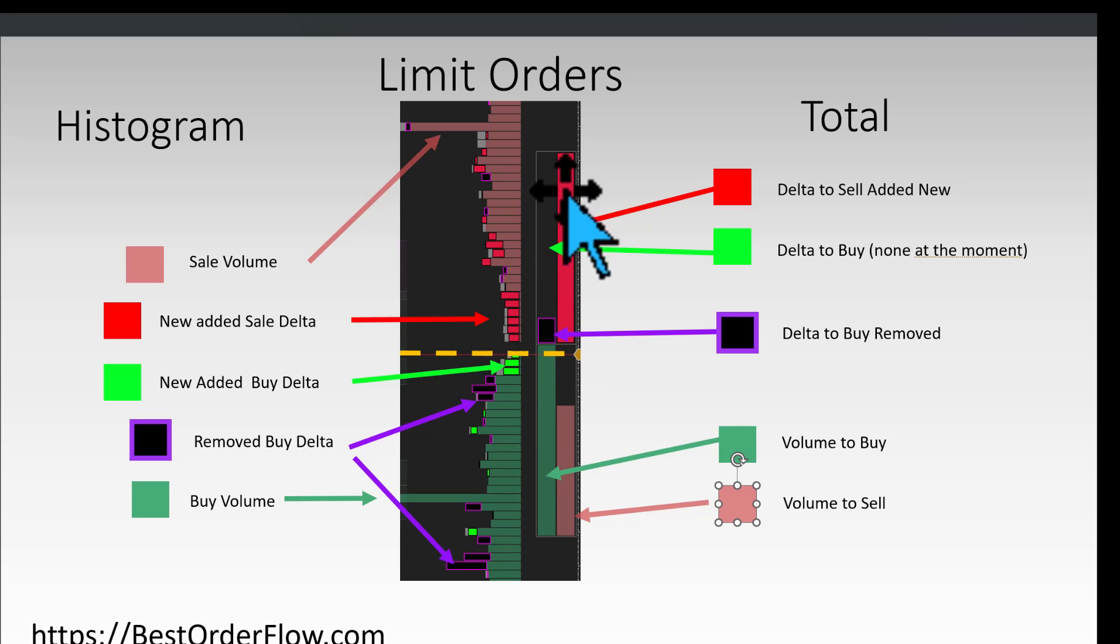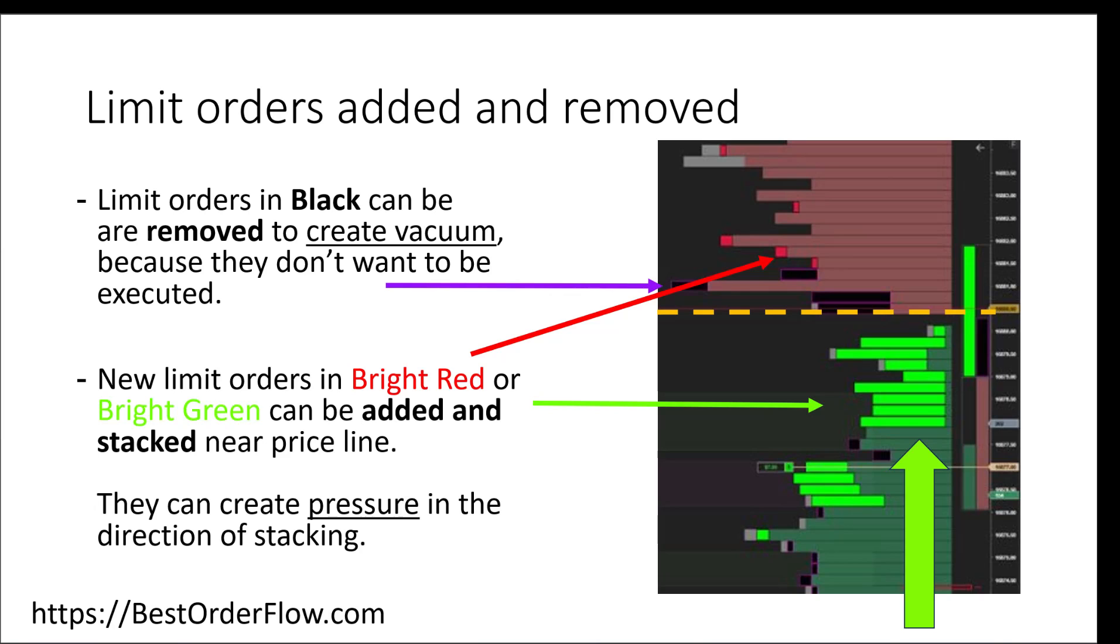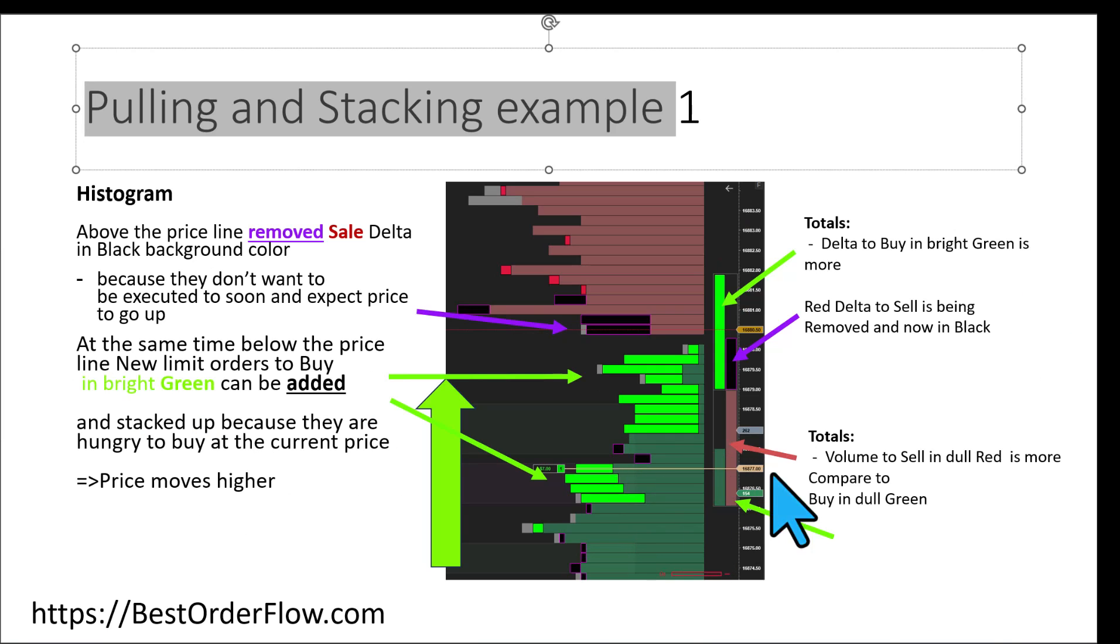The most important for us is to see what's going on nearby the price line. We can see that in a very easy way on the totals because it calculates 10 or 20 levels here and gives you a summary of what's going on.